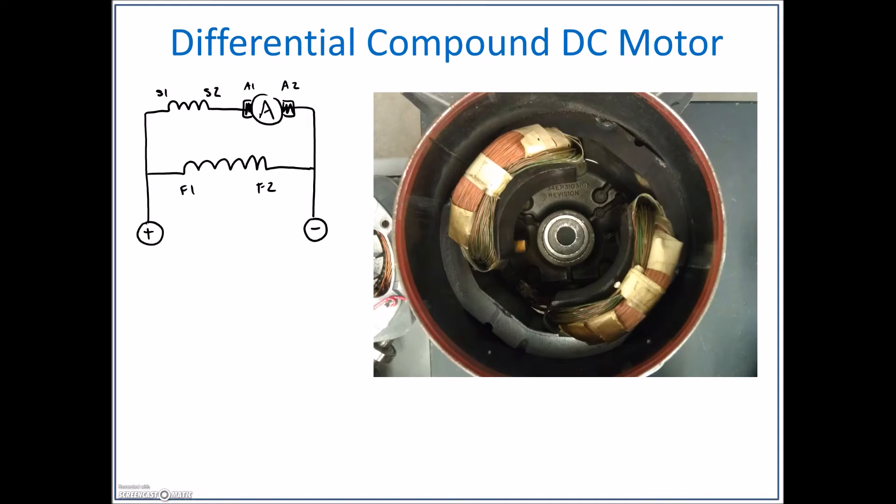The differential connection is simply if you change this connection right here. We need to have our series winding and our shunt winding having the exact same magnetic polarity.